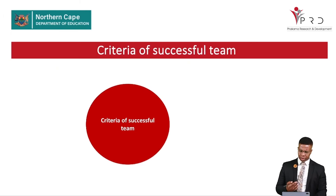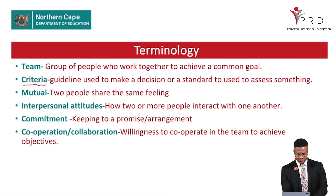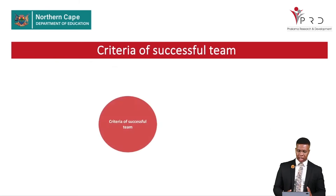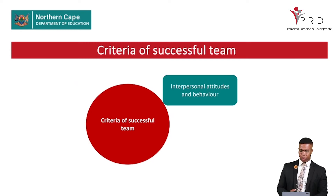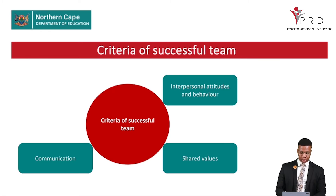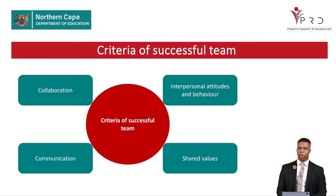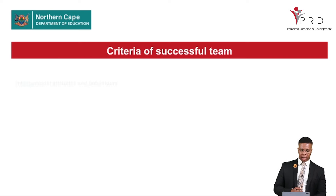The criteria of a successful team — recall that criteria is a guideline or standard used to assess something, basically what is used to check whether something is good or bad. The criteria of a successful team include: interpersonal attitudes and behavior, shared values, communication, and collaboration. For a team to be successful it must have and apply these criteria in a particular way.